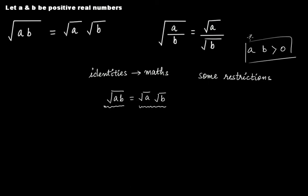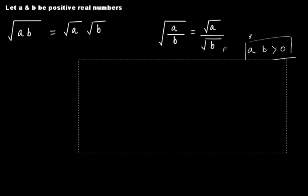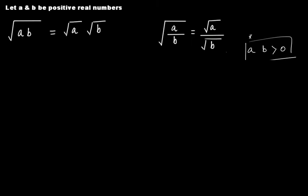If you fulfill this requirement, then whatever value you put for a and b, the LHS will always be equal to the RHS — the equation will always get satisfied. That is an identity in mathematics. So the first identity is: square root of a multiplied by b is equal to square root of a multiplied by square root of b, where a and b have to be greater than zero and positive real numbers.